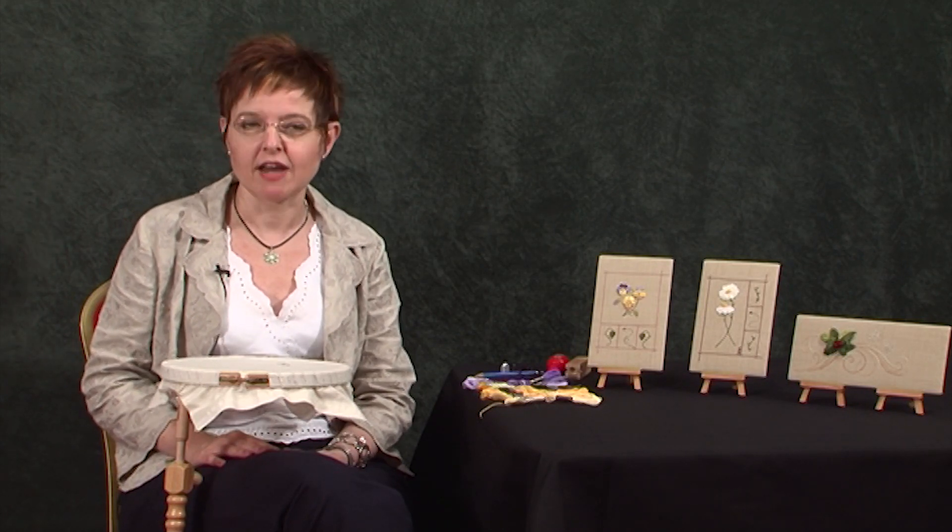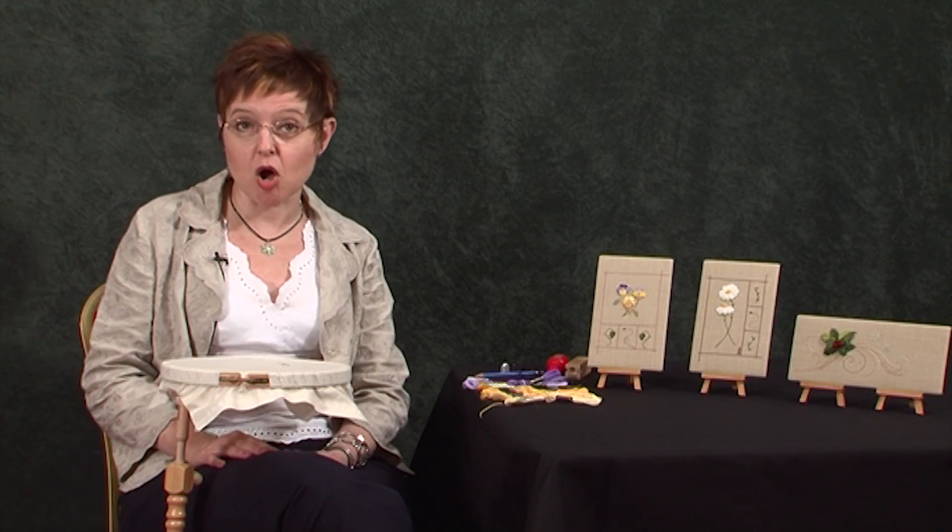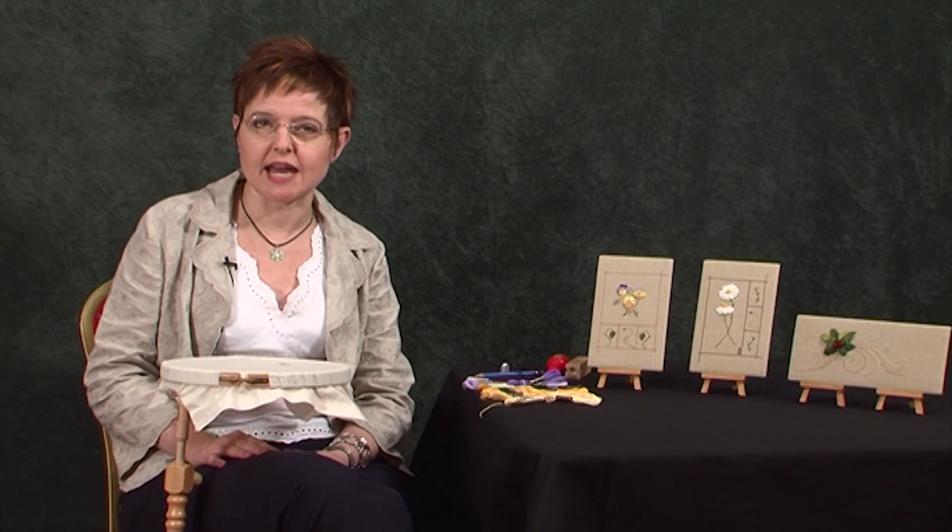They would have started off with something like that and worked their way through different bed linens and embellishments for their clothes. But eventually, if they were wealthy enough, they would have proceeded to stumpwork and worked something that would have ended up being a casket—something to hold valuable letters, spices, or jewellery. It would have been a small box with several drawers and scenes depicting stories from the Bible on it.